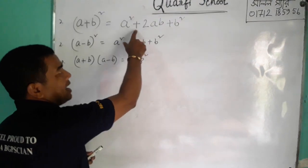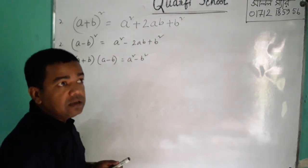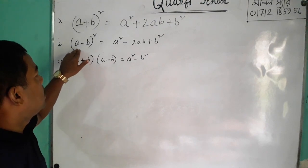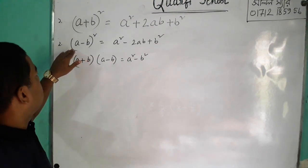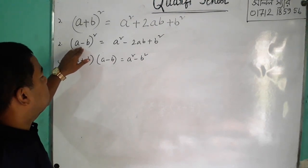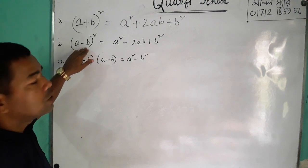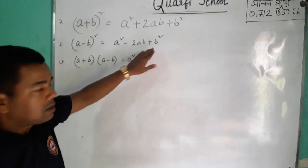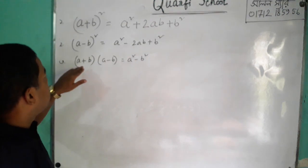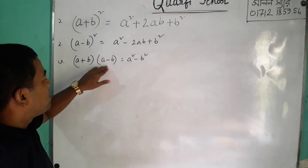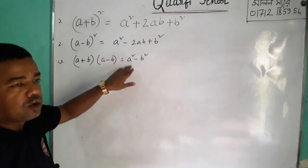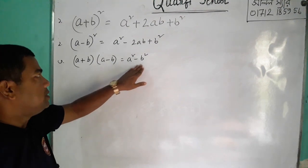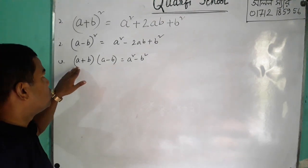A square plus 2ab plus b square. That's the same thing. We have a minus b: a minus b is equal to a square minus 2ab plus b square. But a plus b into a minus b is equal to a square minus b square. That's why we say that a square minus b square is equal to a plus b into a minus b.